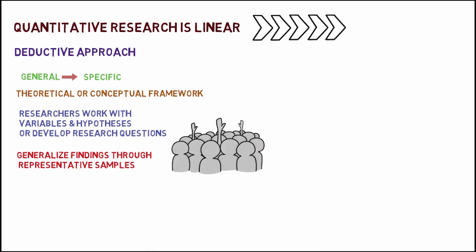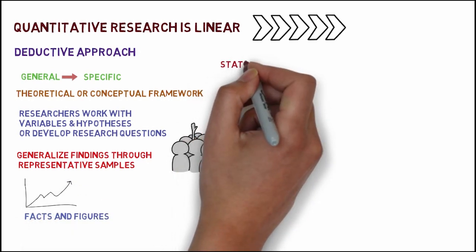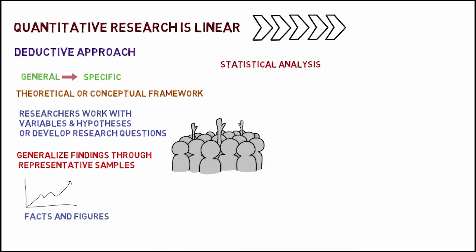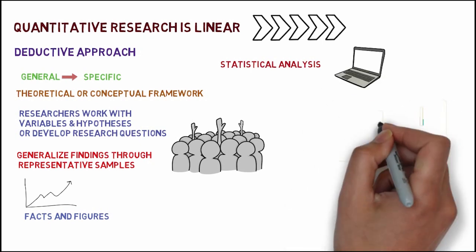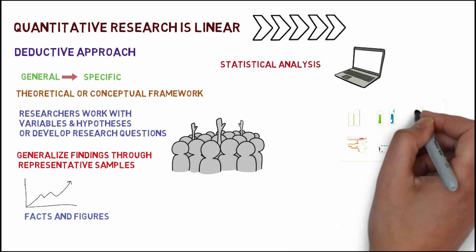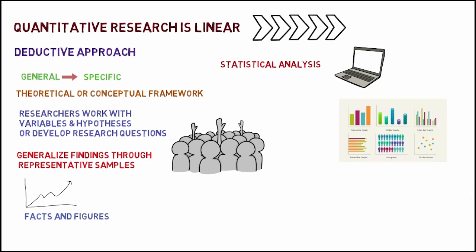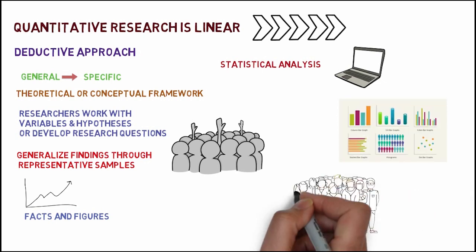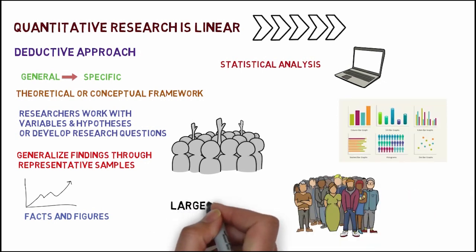The purpose of the study here is to generalise findings through representative samples unlike qualitative research. The main objective of the study is to highlight facts and figures. Here, the researchers present data through statistical analysis. Data can be presented mainly in numbers in quantitative research. Quantitative researchers tend to collect data through larger samples. These studies produce objective conclusions unlike qualitative researches.